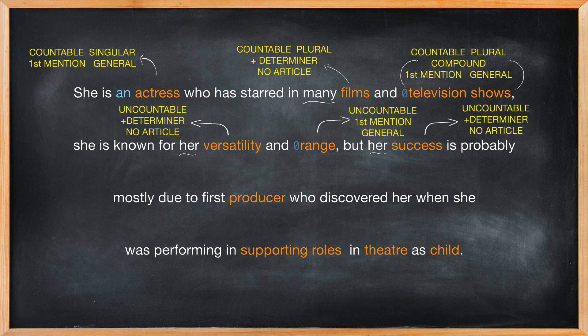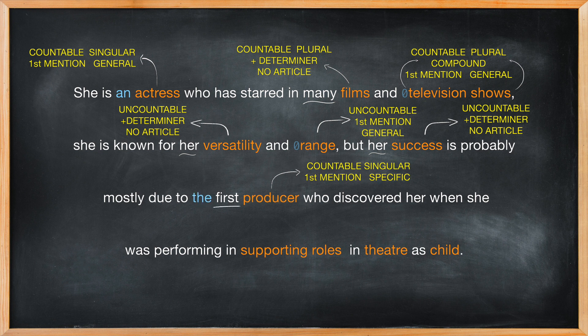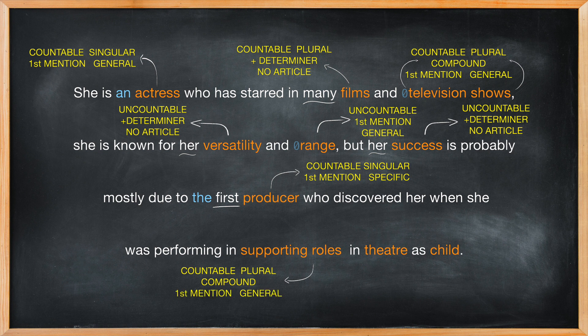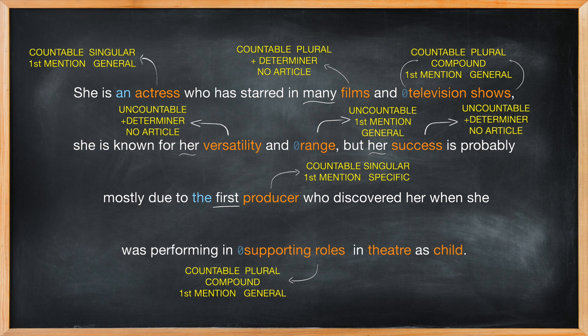Producer is a countable singular noun mentioned for the first time, but it has been made specific with the addition of the adjective 'first', so the definite article is good. Supporting roles is a countable plural noun working with the adjective 'supporting' to make a compound noun, and because it is being used for the first time in general — she performed in some particular supporting roles out of all the supporting roles in the world — a zero article is a good choice.